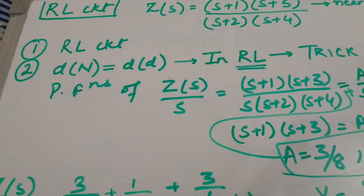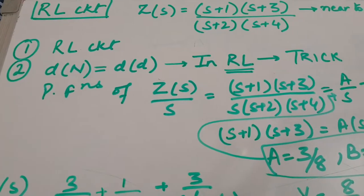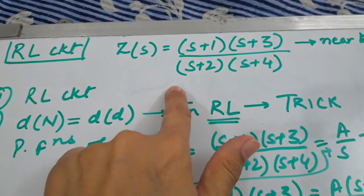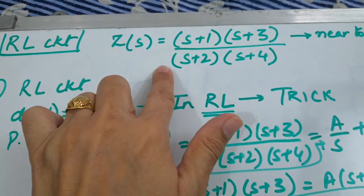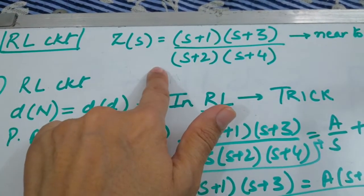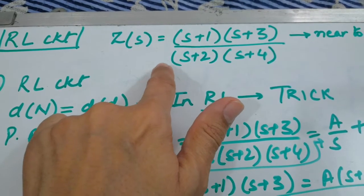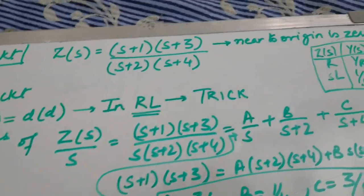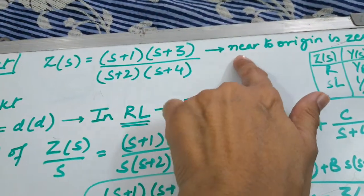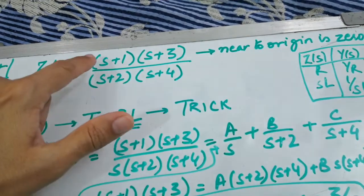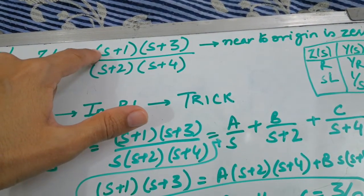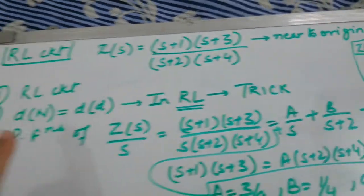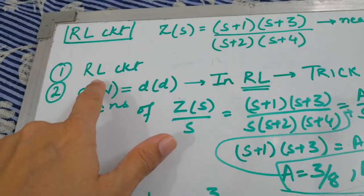Good morning students. Today we are going to do our last form, that is the RL circuit form. For this I have taken the impedance function as shown. Whenever you have been given an impedance function, the very first step we already discussed is to check whether the given function will make an RL, RC, or LC circuit. Here we can see that near to origin there is a zero. The root s equals minus 1 is the zero and s minus 2 is the pole. Since s minus 1 is nearer to the origin, the given circuit will give us an RL circuit.